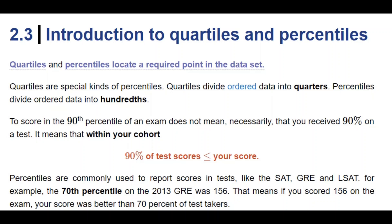For example, if you score in the 90th percentile of an exam, it doesn't mean that you have scored above 90% in the test. It means that within your cohort, 90% of the test scores were less than or below your score.